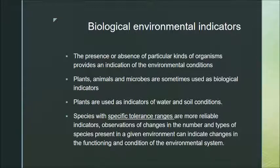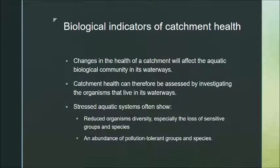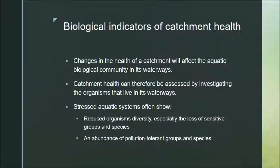The number and changes of the different species present indicate changes in the actual system — by looking at species changes, we can understand what changes are occurring. When we're talking about catchment health, we're talking about rivers and waterways. Any change in water quality will affect the aquatic biological community — the community of living things in the waterway — and so catchment health can be investigated by looking at the organisms that live within it.